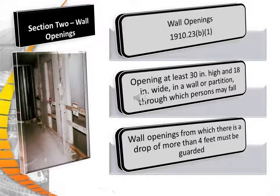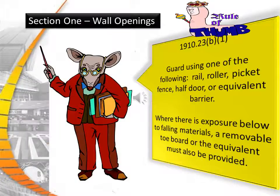Wall openings are covered under .23b1, which states an opening at least 30 inches high and 18 inches wide in a wall or partition through which persons may fall. A wall opening from which there is a drop of more than 4 feet must be guarded. The standard allows guarding using one of the following: a rail, a roller, a picket fence, a half door, or an equivalent barrier. Where there is an exposure below to falling materials, a removable toe board or equivalent must be provided.